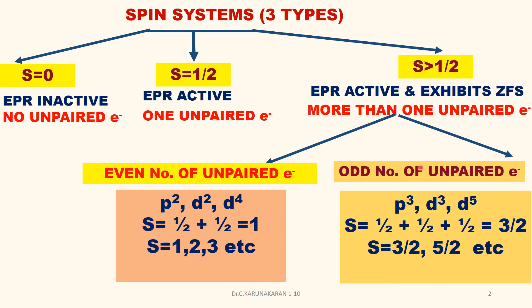The second case is odd number of unpaired electrons, for example P3, D3, D5 transition metal complexes with D3 or D5 configurations. S equals 1/2 + 1/2 + 1/2 = 3/2. In the case of manganese(2+), there are 5 unpaired electrons, therefore S equal to 3/2, 5/2, 7/2, etc.